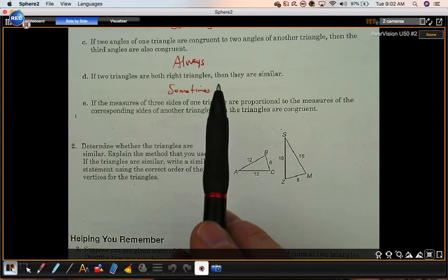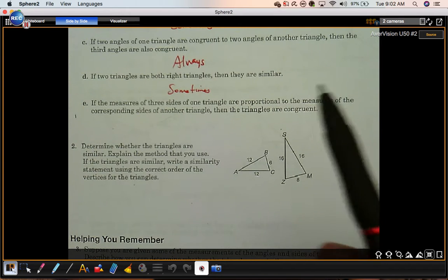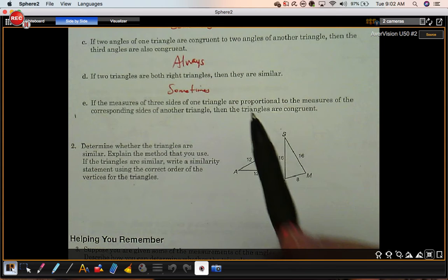Now, if you had two right triangles with a pair of congruent acute angles, then they would be similar. Because that would be angle-angle.